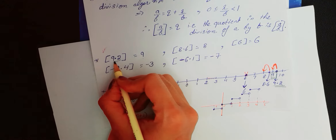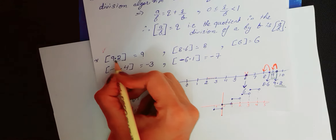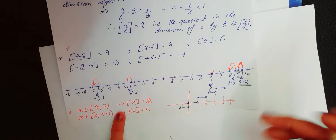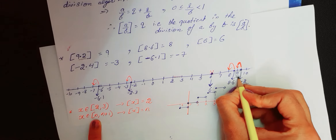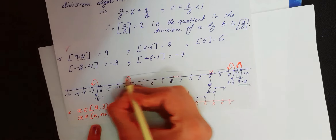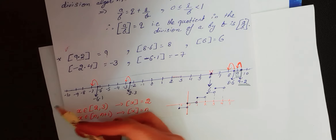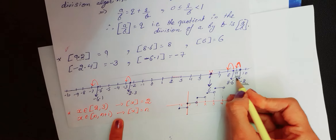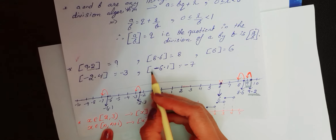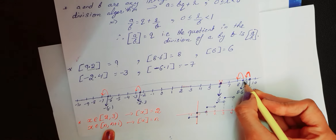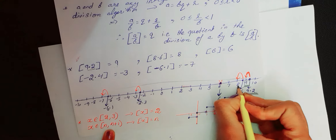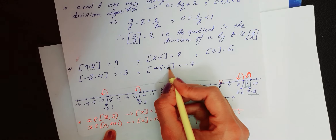Ab jaisa ki hum dekh sakte hain — beshak naam greatest integer function hai, lekin confused nahi hona. Actually greatest integer function naam kyun pada? Kyunki 9.2 ek real number hai aur 9.2 ke left mein hamare paas infinite integers hain up to minus infinity, aur in sab mein se greatest integer 9 uthaya gaya jo 9.2 se less hai. Aise hi agla example 8.6 — number line pe 8 aur 9 ke beech lie karta hai, aur uske left mein sabse bada integer 8 hai. Toh 8.6 ka greatest integer 8 hoga.